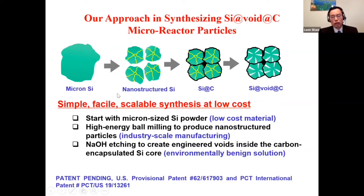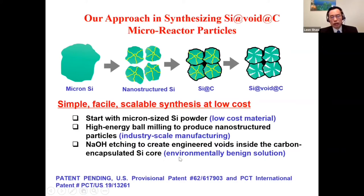After forming the nanostructured silicon particles, we apply a carbon coating, and then perform sodium hydroxide etching to generate the engineered voids inside the silicon core. This yields a structure similar to the yolk-shell structure. We use sodium hydroxide etching, which is a very environmentally benign solution. The entire process is industrially scalable and results in a low-cost product.